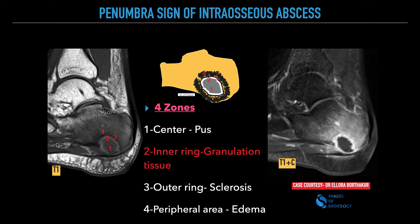On this T1 weighted image, you can see a well-defined lesion. Zone 1 is in the center, followed by zone 2, zone 3, and zone 4. The center — zone 1 — is nothing but pus. Zone 2 is the inner ring which is T1 hyperintense, and on post-contrast you can see a thick rind of enhancement representing granulation tissue. Zone 3 is the outer ring representing sclerosis or a fibrotic reaction. Zone 4 is the extensive edema surrounding the lesion.